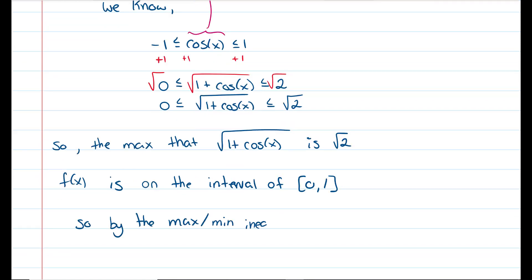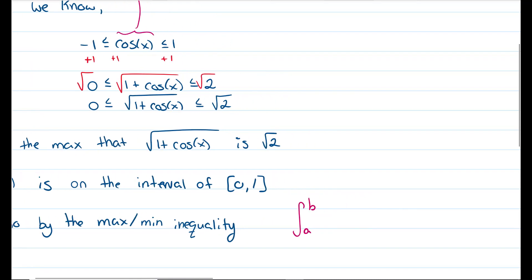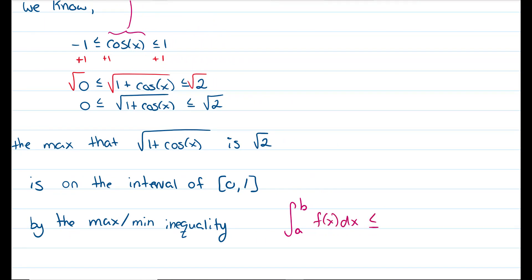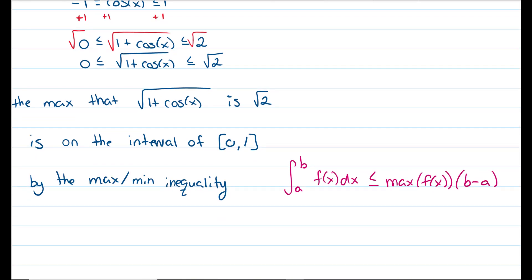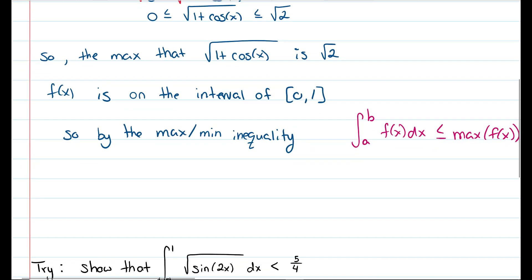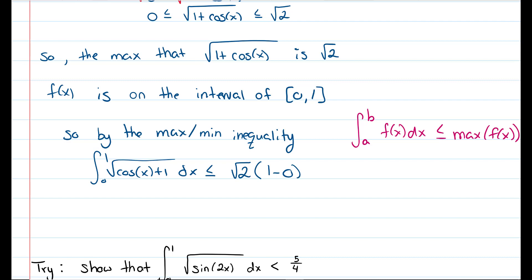Here we use the maximum inequality, which says that the integral from a to b of f of x dx is less than or equal to the maximum of f of x times b minus a. So the integral from 0 to 1 of the square root of 1 plus cosine of x dx is less than or equal to the square root of 2 times 1 minus 0, which equals approximately 1.414, which is less than or equal to 3 halves.